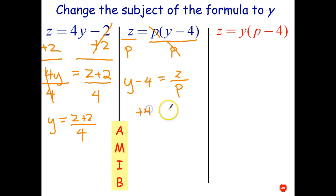And to finish off, we undo subtracting 4 by adding 4. They cancel out. And y equals z over p plus 4.